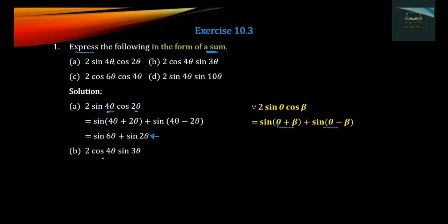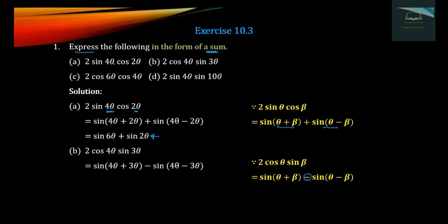The double sine formula: sine no chain. Now applying the node: sin 4 theta minus 3 theta, and sine 7 theta minus sine theta. This is the result here.